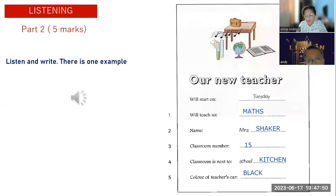Okay, let me check. So we'll start on Tuesday and we're gonna teach us what? It's science. And what is the name of the new teacher? Mrs. Shaker. And the classroom number is number 15. Classroom is next to where? It is kitchen. Okay, next to the kitchen. Okay, let me see. Colour of the teacher's car, what is the colour of teacher's car? Black. Okay.